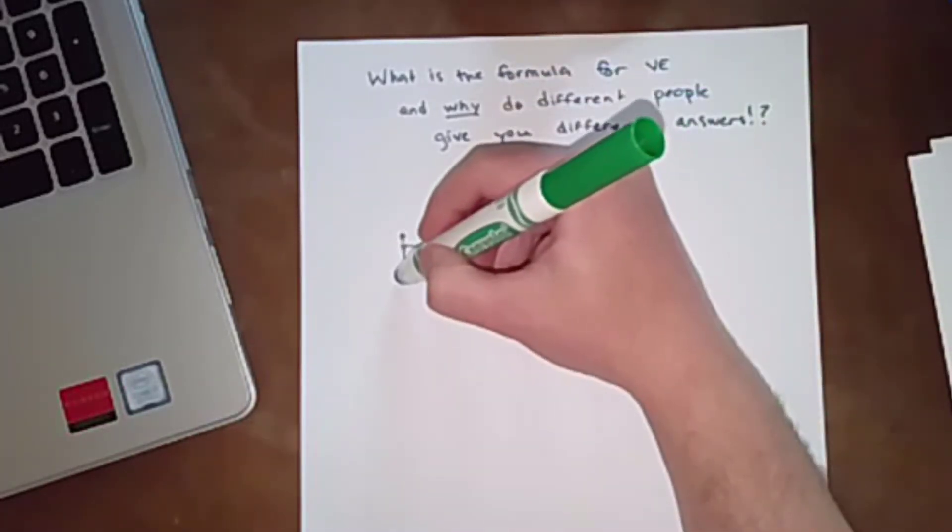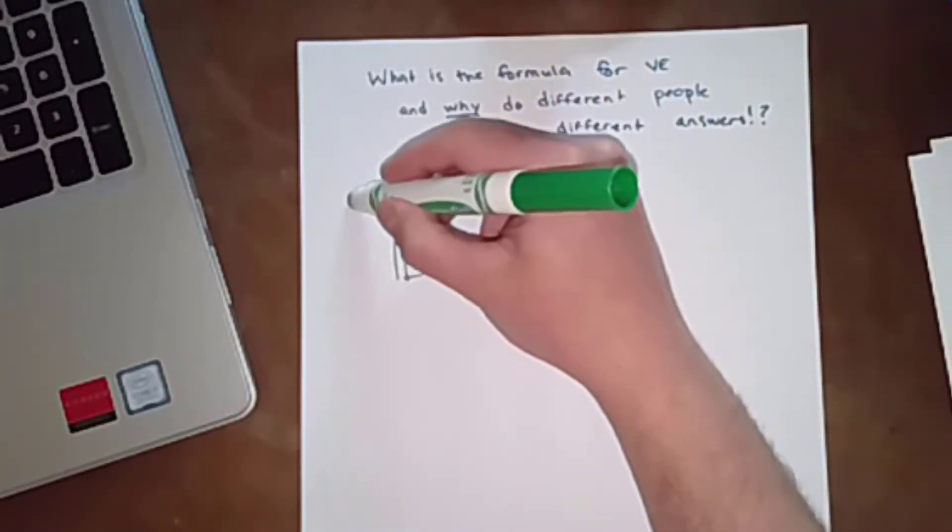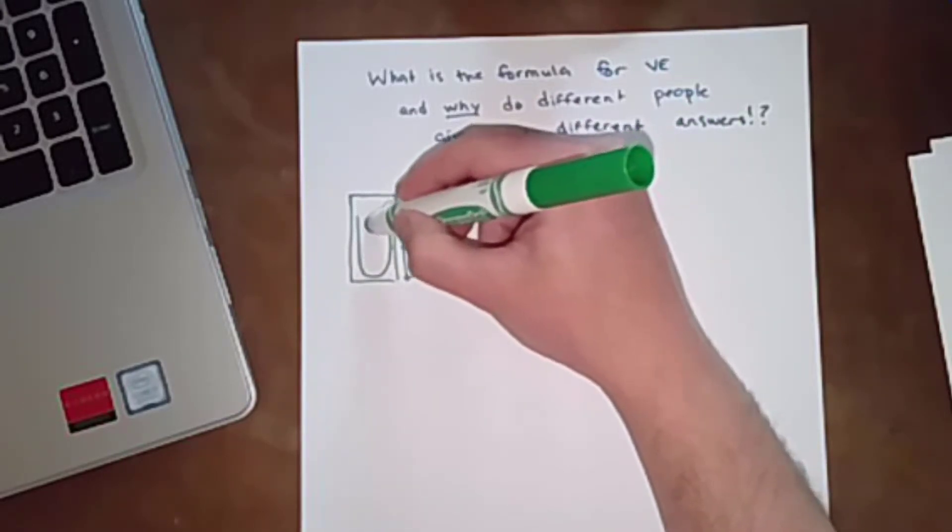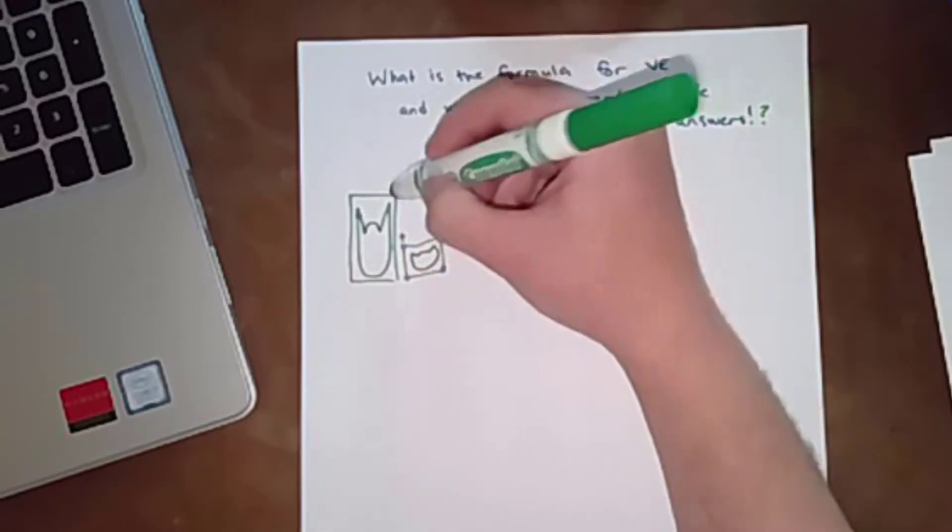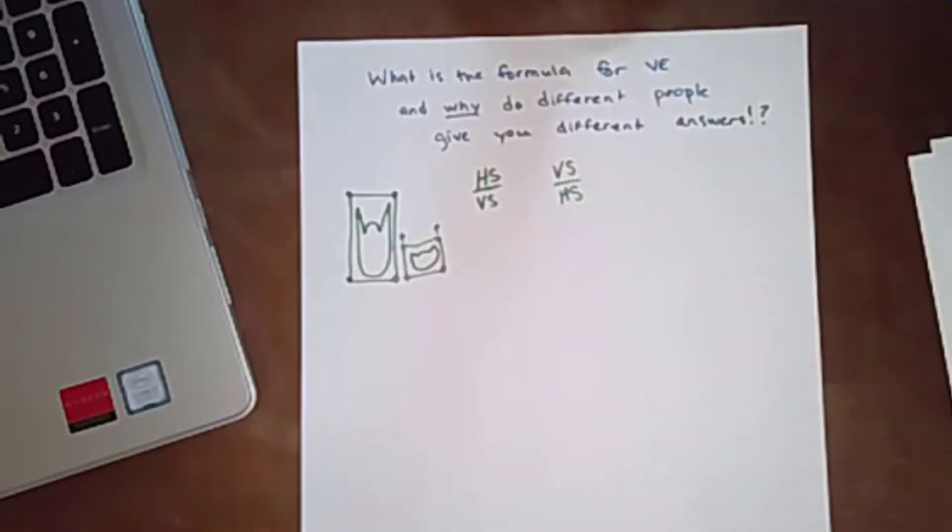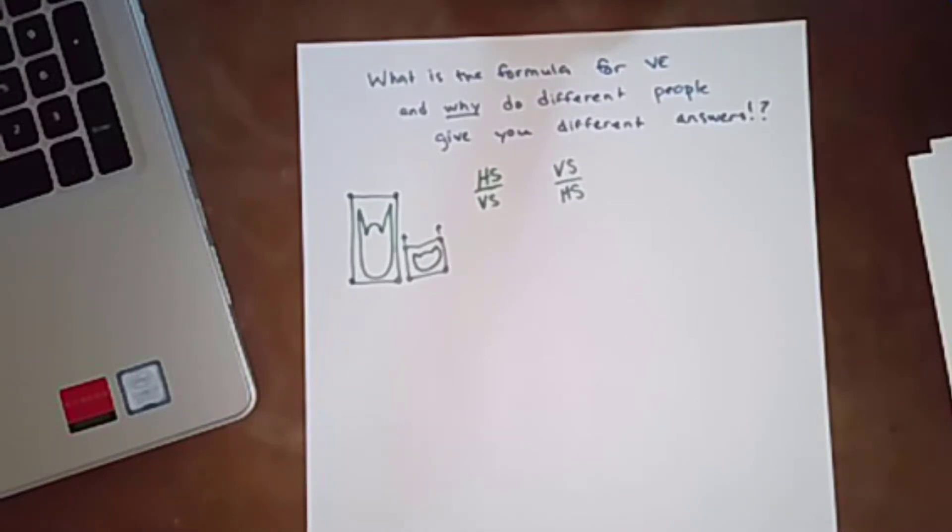If you did that, you could really exaggerate the way that that cat looks, and then you would be able to tell, oh yeah, that's definitely a cat. You can see the ears.